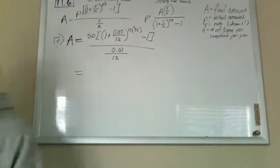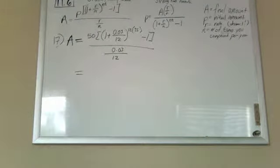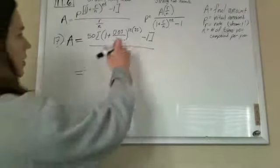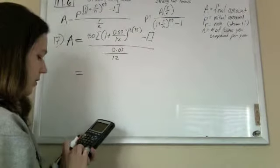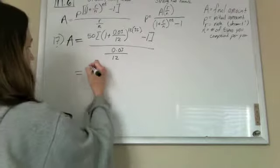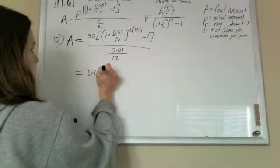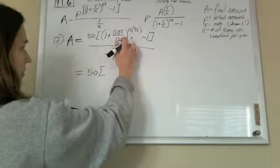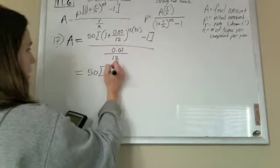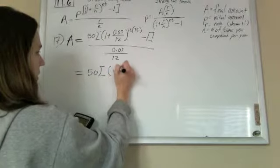So we're just plugging and chugging. We're always going to start with that 0.03 divided by 12. So 0.03 divided by 12. So I'll solve this: 50. And this gave me 0.0025. Add the 1, I get 1.0025.